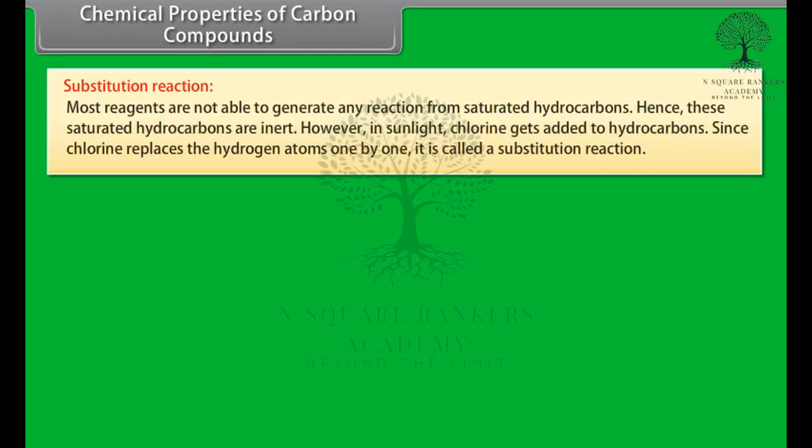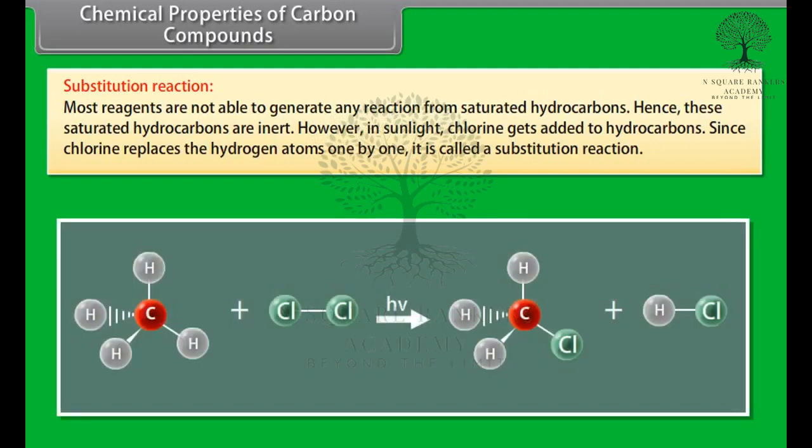Substitution reaction. Most reagents are not able to generate any reaction from saturated hydrocarbons. Hence, these saturated hydrocarbons are inert. However, in sunlight, chlorine gets added to hydrocarbons. Since chlorine replaces the hydrogen atoms one by one, it is called a substitution.